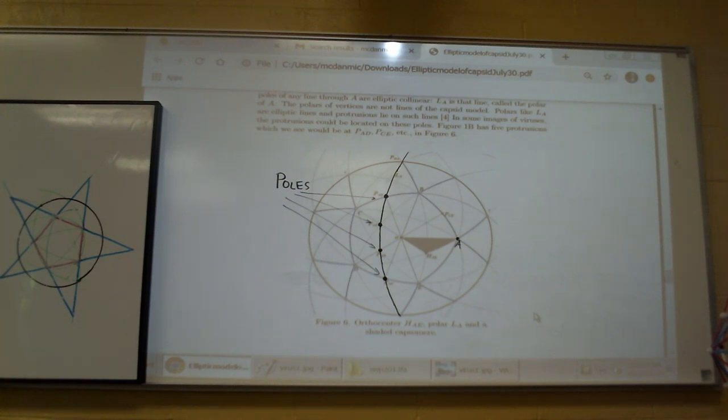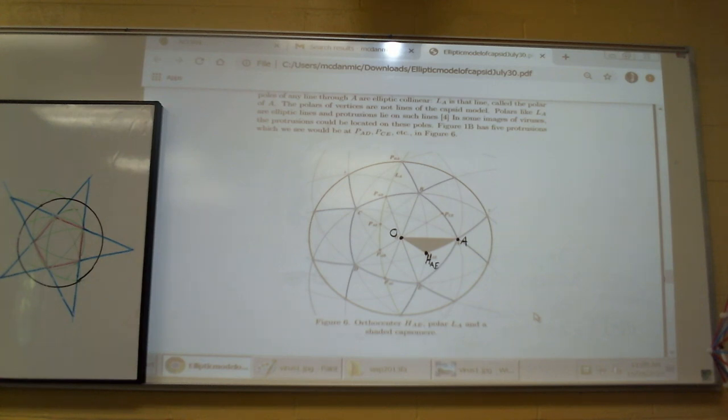In such images of viruses, the protrusions could be located on these poles. So mathematicians can use the elliptic structure to understand some biochemical facts about capsids. The construction is so easy with only two sizes of the radius for the compass that we cannot help but feel the construction has something to do with the success of the icosahedral virus structure.